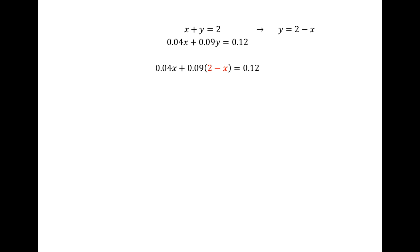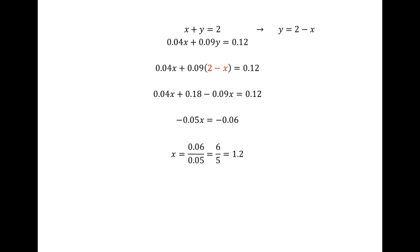Solving by substitution: from the first equation, y equals 2 minus x. Substituting into the second equation and distributing, we get 0.04x plus 0.18 minus 0.09x equals 0.12. Rearranging gives negative 0.05x equals negative 0.06, and dividing gives x equals 0.06 over 0.05, or 6 fifths, which is 1.2. Therefore y equals 2 minus 1.2 equals 0.8 ounces.